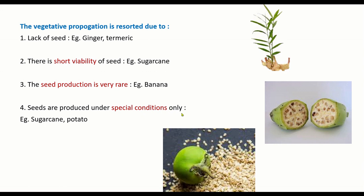Seeds are produced under special conditions only — for example, true potato seeds require cold climatic conditions and higher altitude. These are the factors which contribute to why vegetatively propagated crop plants are maintained and propagated by vegetative propagation only.